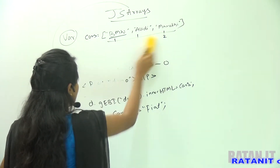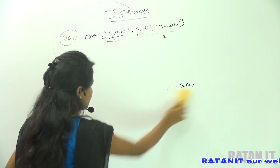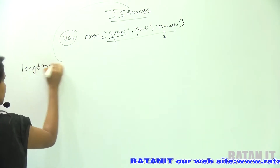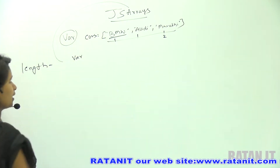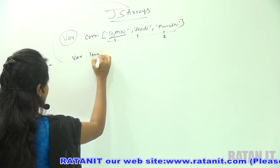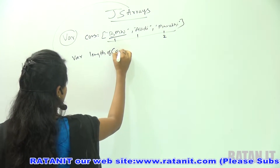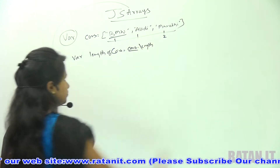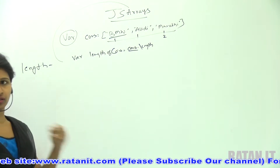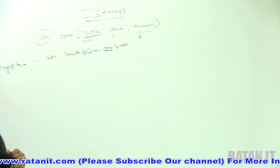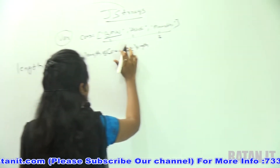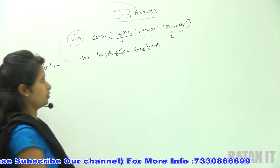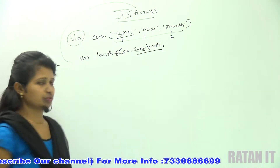To know the length of an array, we have a length property. We are going to calculate this length as: cars.length — that is the array name dot length property. This is how we use the length property.